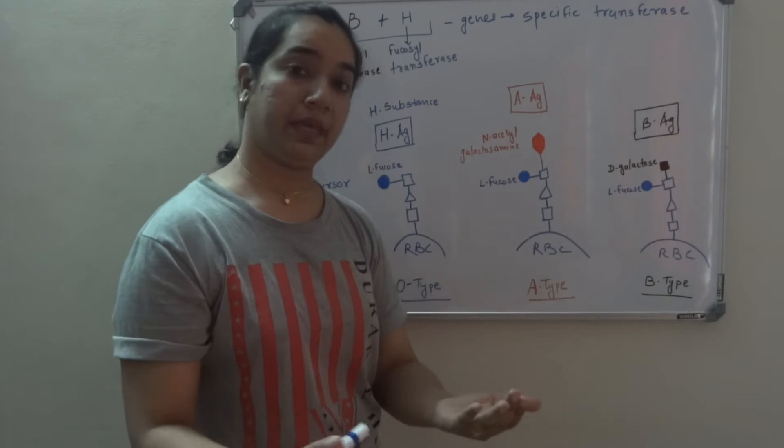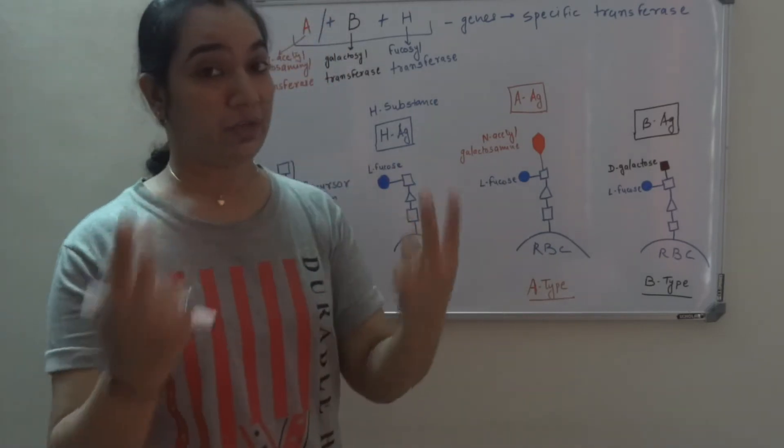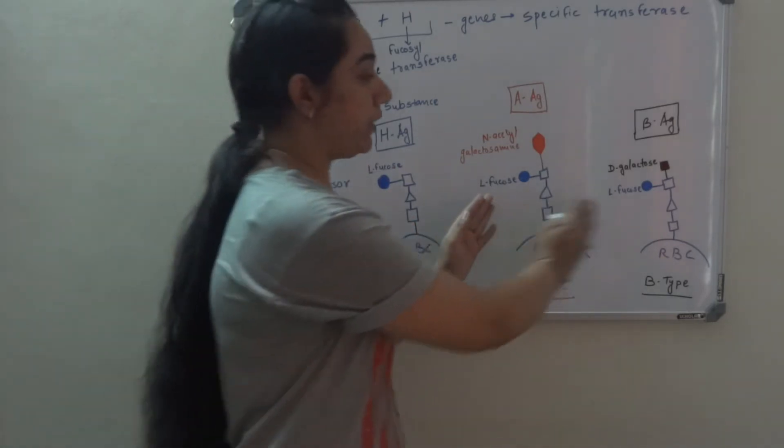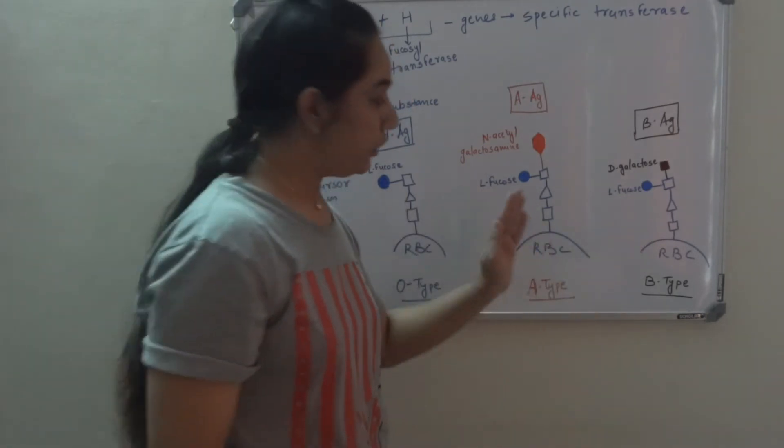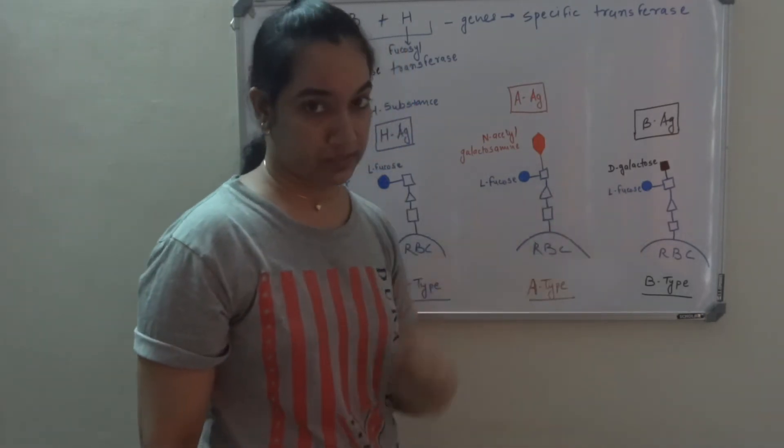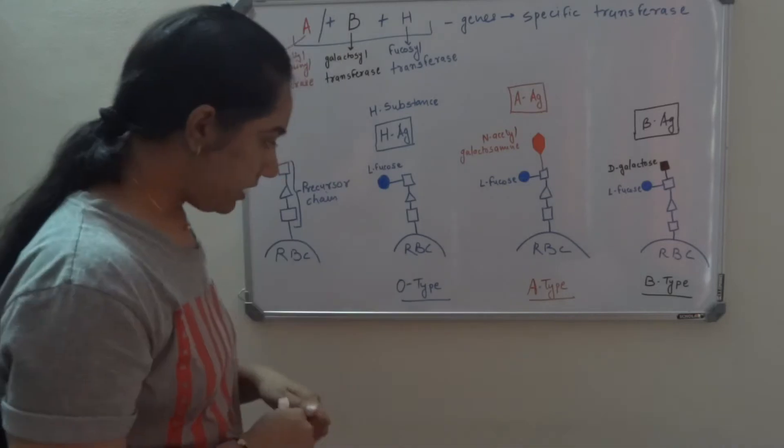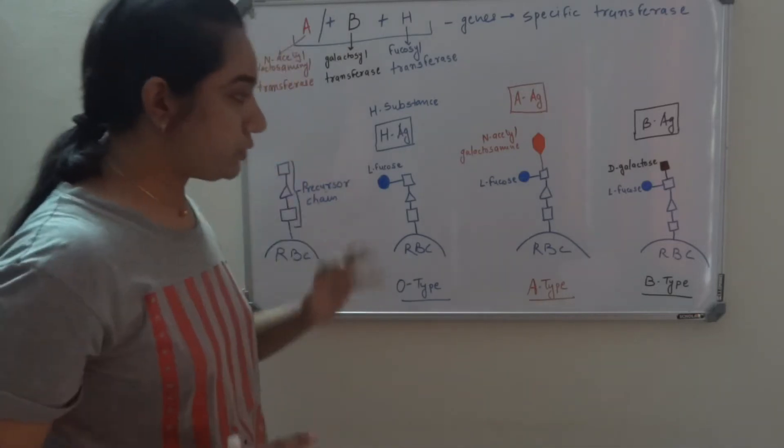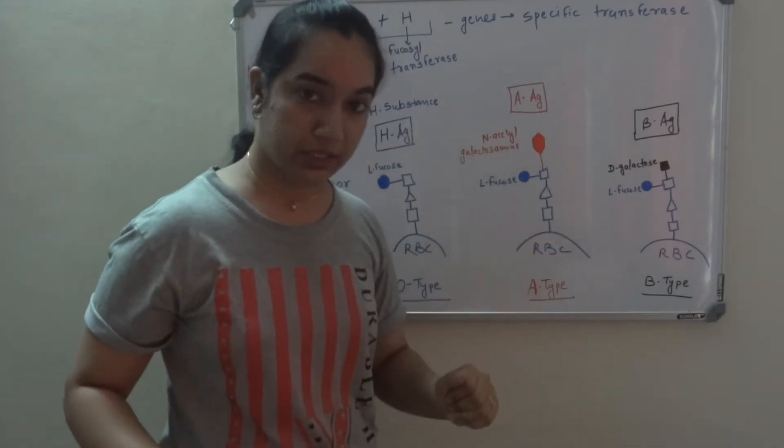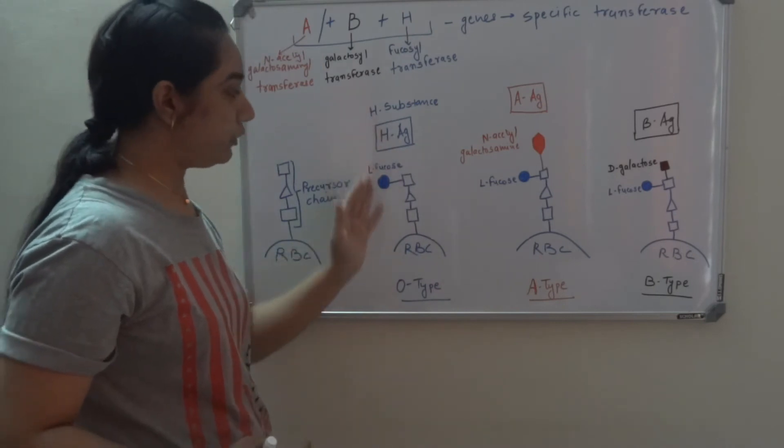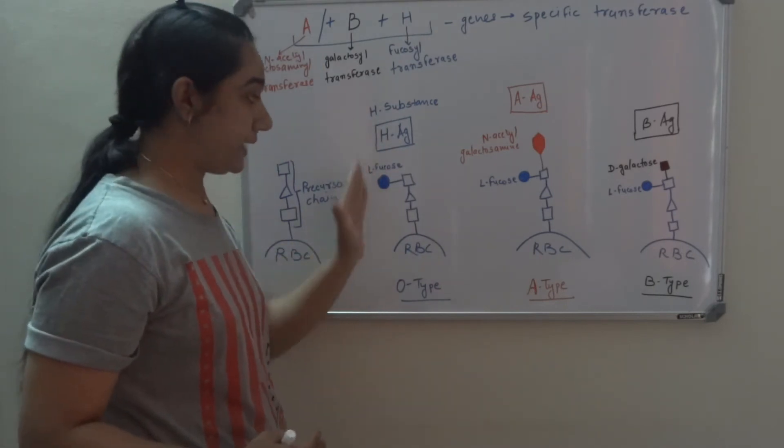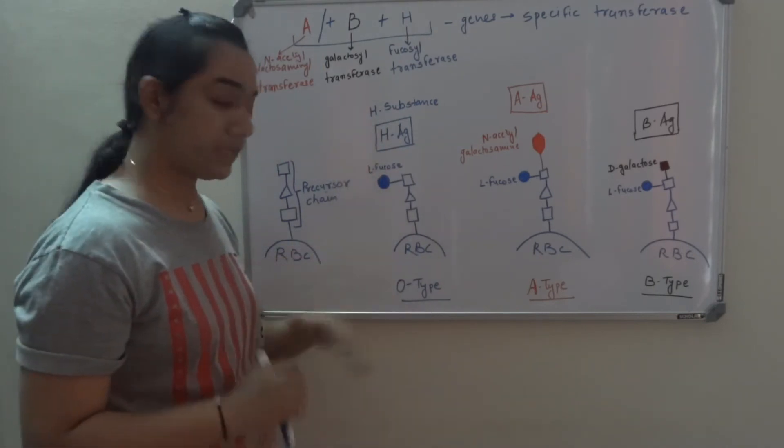In some cases, both A and B are present. Then there are two enzymes produced and two carbohydrate moieties are added to two different H substances present on RBC. Now the individuals who do not have this A and B gene, they would have only gene for H. As a result, only H substance is made and they are classified as O.